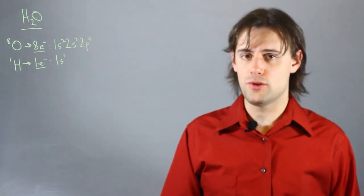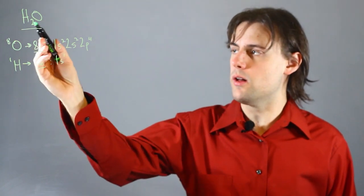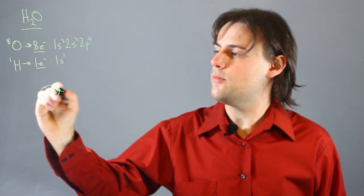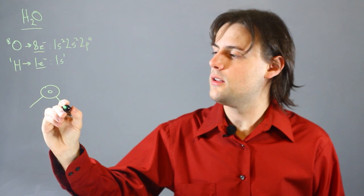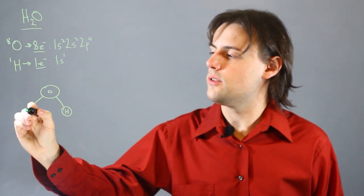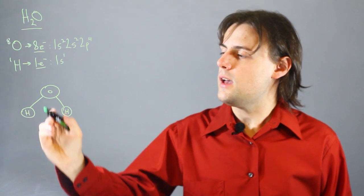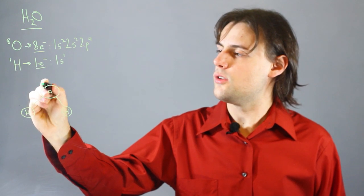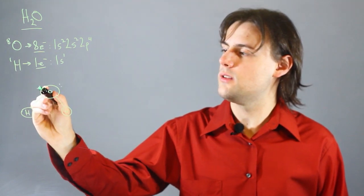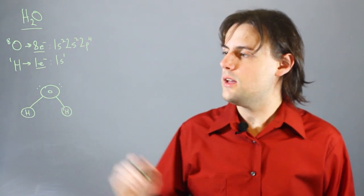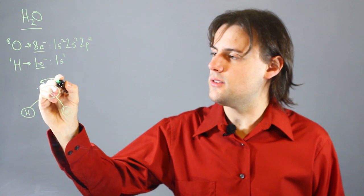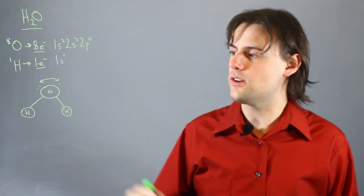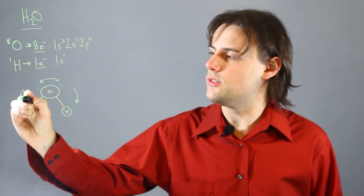So now, if we draw the Lewis dot structure corresponding to one molecule of water, H2O, we would have an atom for oxygen bonded to two atoms of hydrogen. And the reason that these bonds are bent is because there are two sets of electrons on the top of this diagram, and since the electrons have the same charge, they are electromagnetically repelling each other, causing these bonds to bend.